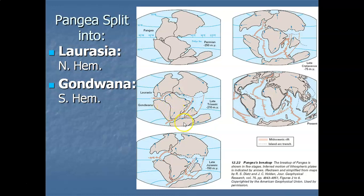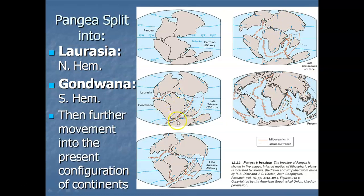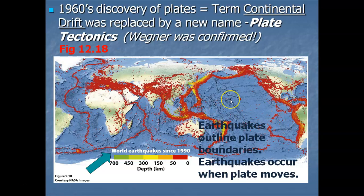The southern hemisphere landmass was more complex, containing South America and Africa attached, plus Antarctica, Australia, and India. Wegener named it Gondwana — after a geologic region in India. India was in the southern hemisphere back then and drifted northward, which is why it got that name. Then the two giant continents continued to drift and pull apart until we have the configuration we have today.